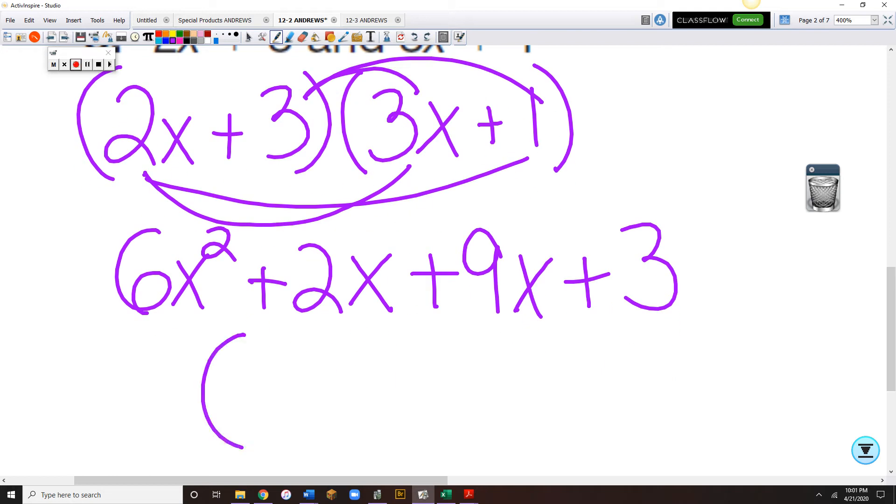Then we'll combine our like terms. So 6x squared. Because that's a squared, it's not a like term with the other x terms because it has an exponent. 2x and 9x make 11x. And plus 3 doesn't have any x. So that's also not a like term.